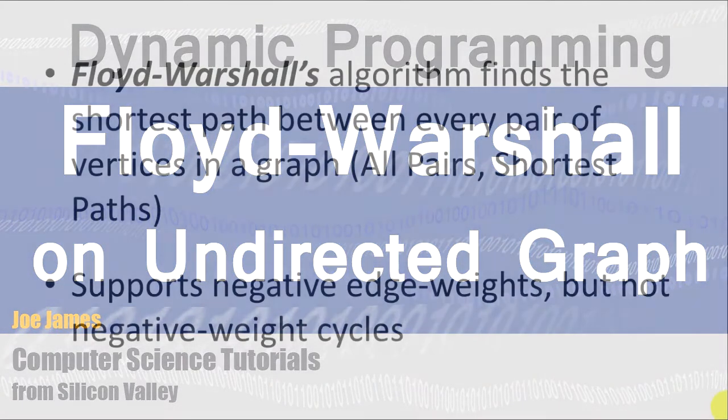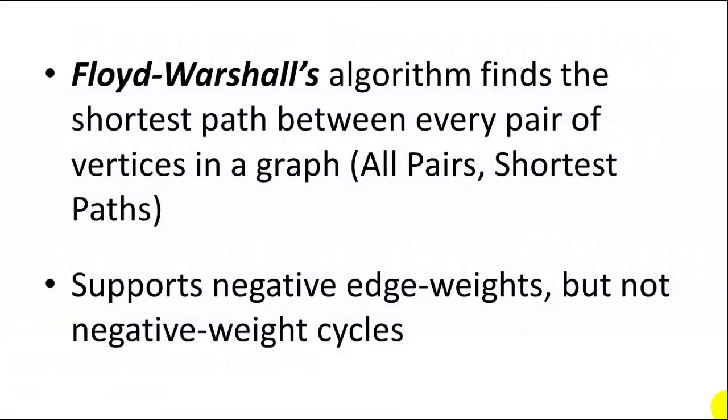Floyd-Warshall's algorithm, just as a reminder, finds the shortest path between every pair of vertices in a graph. So it's known as an all-pairs shortest path algorithm. And it supports negative edge weights, but does not support negative weight cycles.